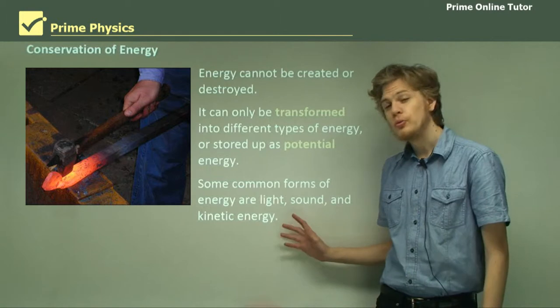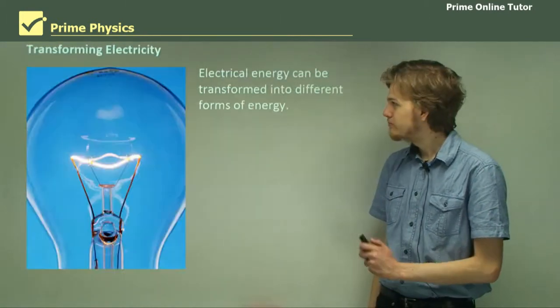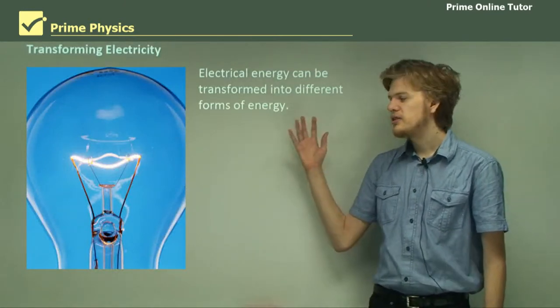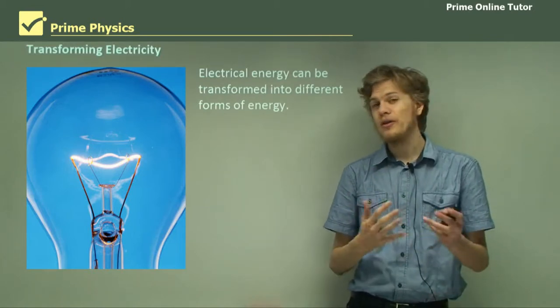So some common forms of energy are light, sound, and of course kinetic energy. Now electrical energy is very useful because it can be transformed into different types of energy, and those different types of energy can be used around the house.